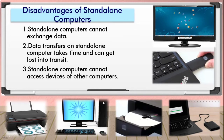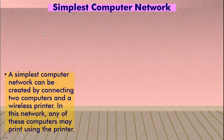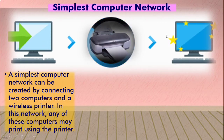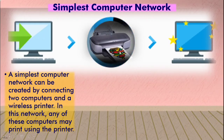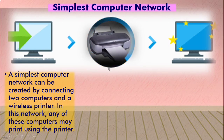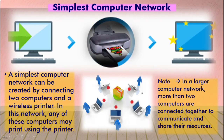Now we will see a simplest computer network. A simplest computer network is connected by two computers and a wireless printer. With the help of this network, you can take a printout from any of those computers. See here — two computers are there and you can take a printout from either one because this printer is attached to the network. A large computer network means you can connect more than two computers and share your files as well.